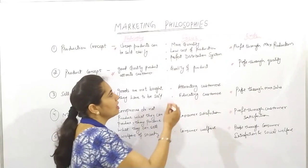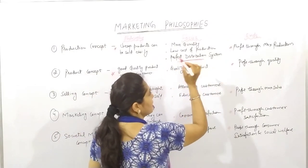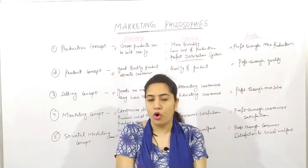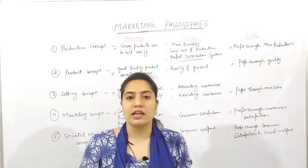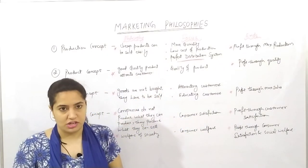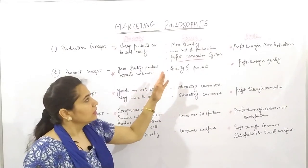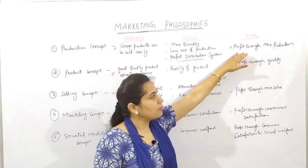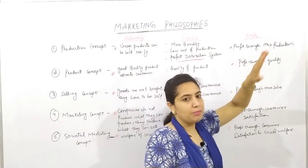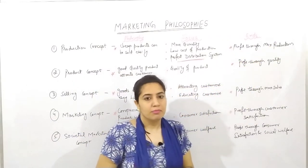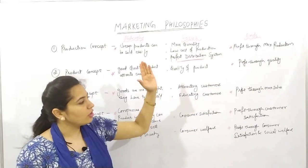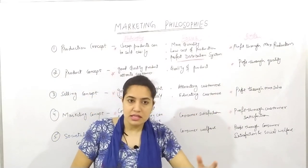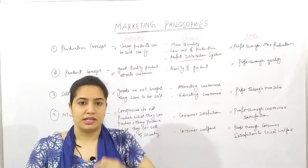They also emphasized a perfect distribution system — meaning if I am producing a product in Delhi, it should be sold all over India, not just limited to Delhi. Their concept ended at profit through maximum production — every philosophy wants to earn profit, but in this concept profit came from producing as much as possible.